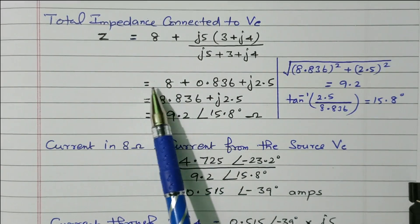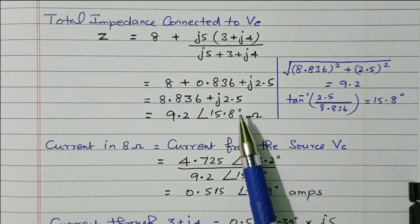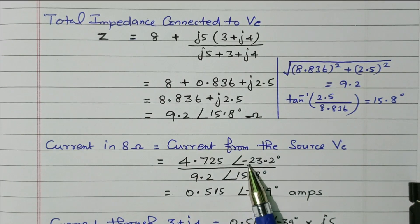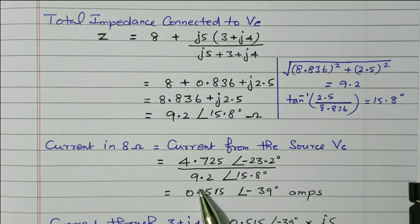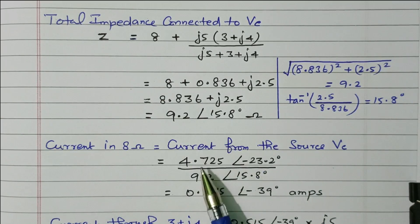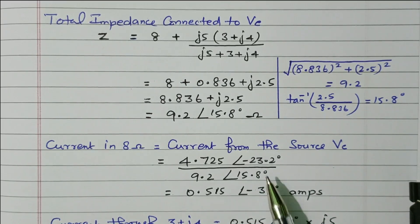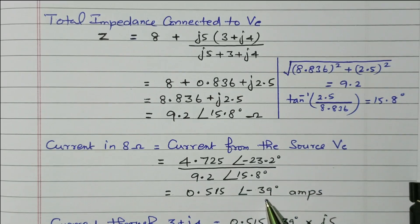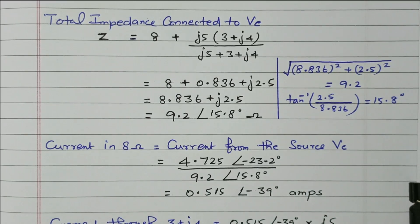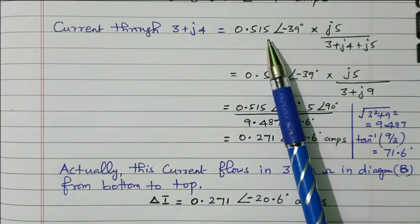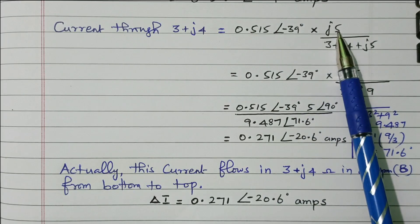So only the 5 ohm changed to 8 ohm; this value remains the same. From that, we can calculate the total current in the circuit. I equals V by R. V is the compensation voltage 4.725 at angle minus 23.2 degrees, divided by the total impedance of network B, 9.2 at angle 15.8 degrees. Now we need to find the current through the 3 plus J4 ohm resistor. We calculate this by the current divider rule: total current multiplied by the other branch impedance divided by total impedance.